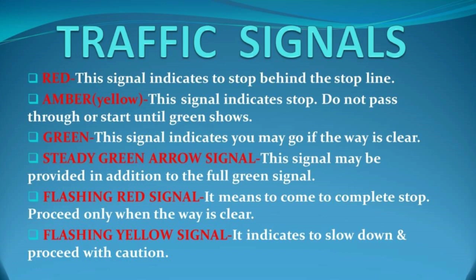Traffic signals: A traffic light is a signaling device positioned at road intersections and pedestrian crossings to indicate when it is safe to drive, ride, or walk using a universal color code. Red: stop behind the stop line. Amber/yellow: stop — do not pass or start until green shows; if caught in yellow signal in the middle of a large crossing, continue with care and do not accelerate in panic. Green: you may go if the way is clear. Steady green arrow: may be provided in addition to the full green signal. Flashing red: come to a complete stop and proceed only when the way is clear. Flashing yellow: slow down and proceed with caution.